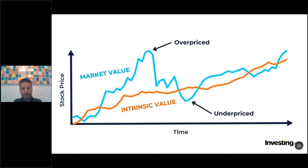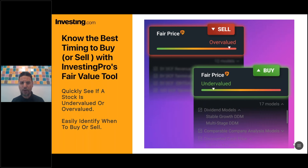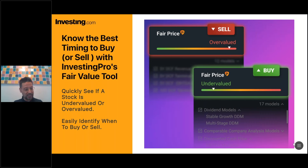This is what every investor wants - buying an underpriced stock. It doesn't always work out this way, but doing that with the help of the Fair Value tool on InvestingPro helps you easily identify that opportunity. It lets you quickly and very easily see if a stock is undervalued or overvalued - you don't have to dig too deep into the models. InvestingPro does all that hard work for you to identify when the right time is to buy or sell.